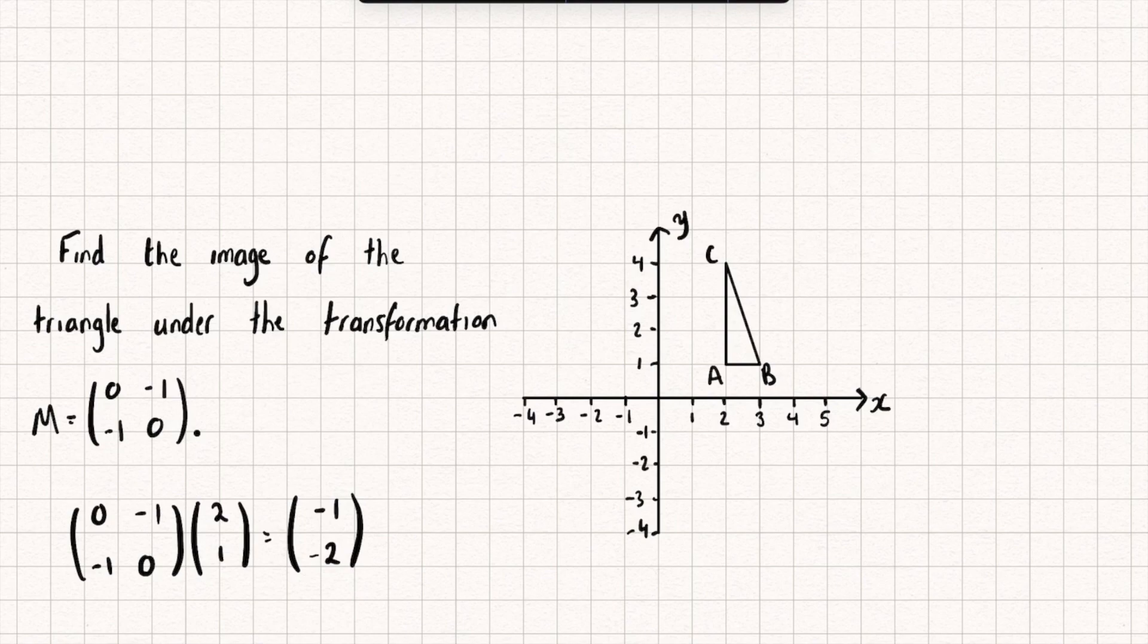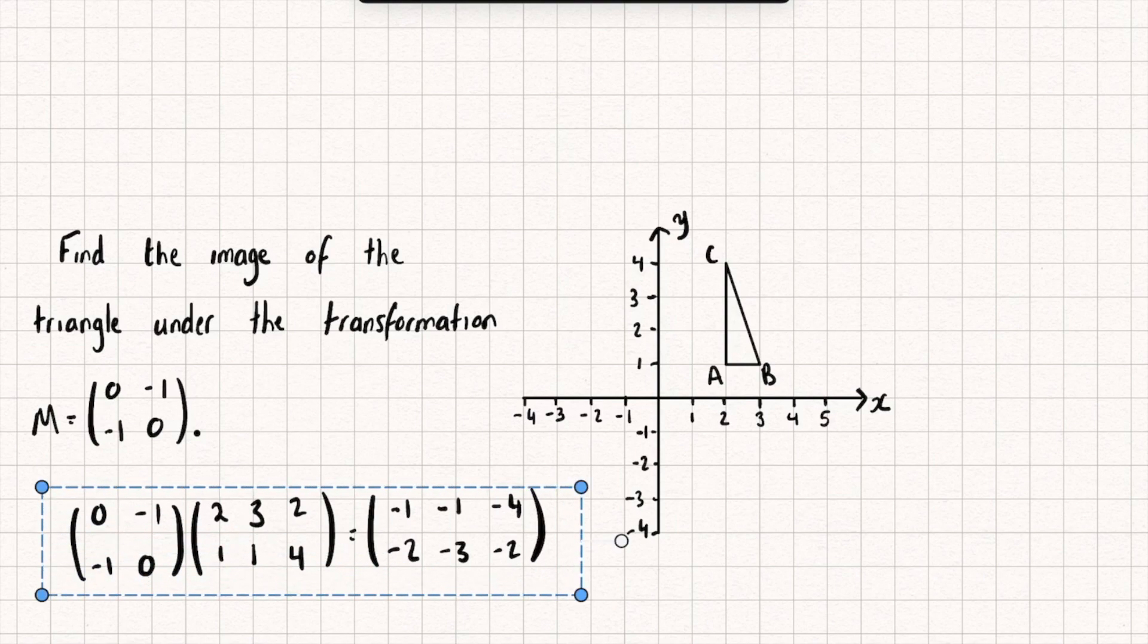We could then do this for point b and point c. But a quicker way to do this would be to extend this column vector and turn it into a matrix where the columns are the vertices of our shape. The second column could be the vertex b, with the points (3, 1). The third column could have the entries (2, 4) to represent the point c. Let's multiply out this matrix, and we're going to get (-1, -2), (-1, -3), and (-4, -2).